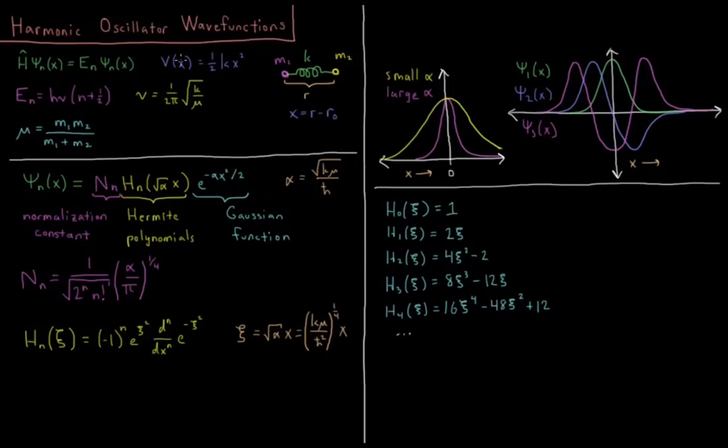So when we solve that Schrödinger equation with that potential energy function, we get that the energy of our system equals h nu times the quantum number n plus one-half, n being a quantum number starting at zero going up to infinity as an integer.